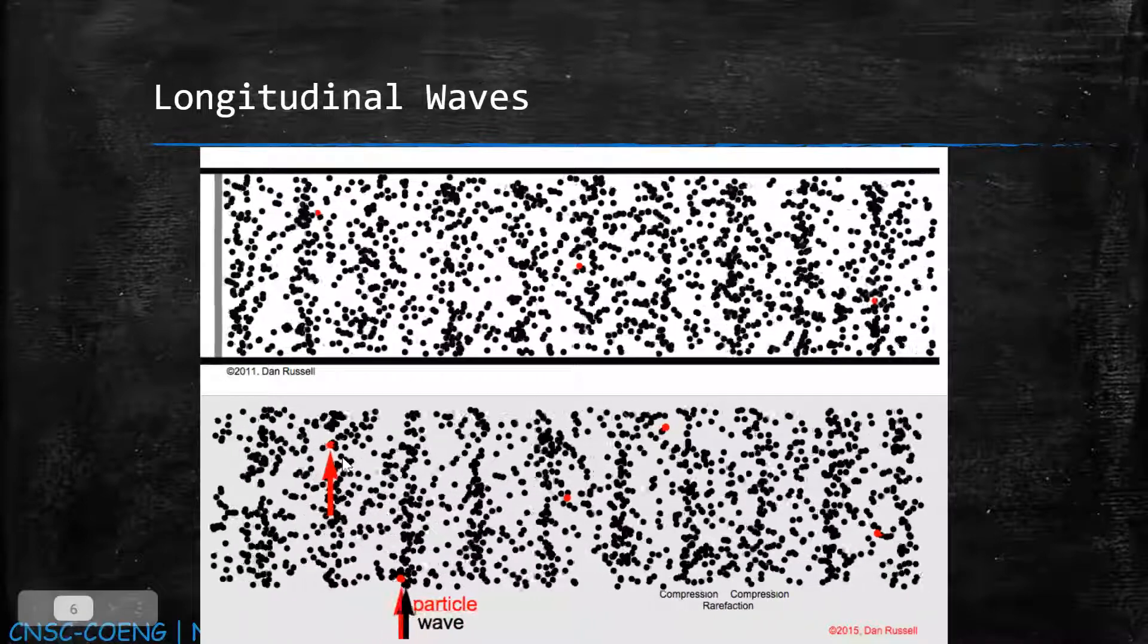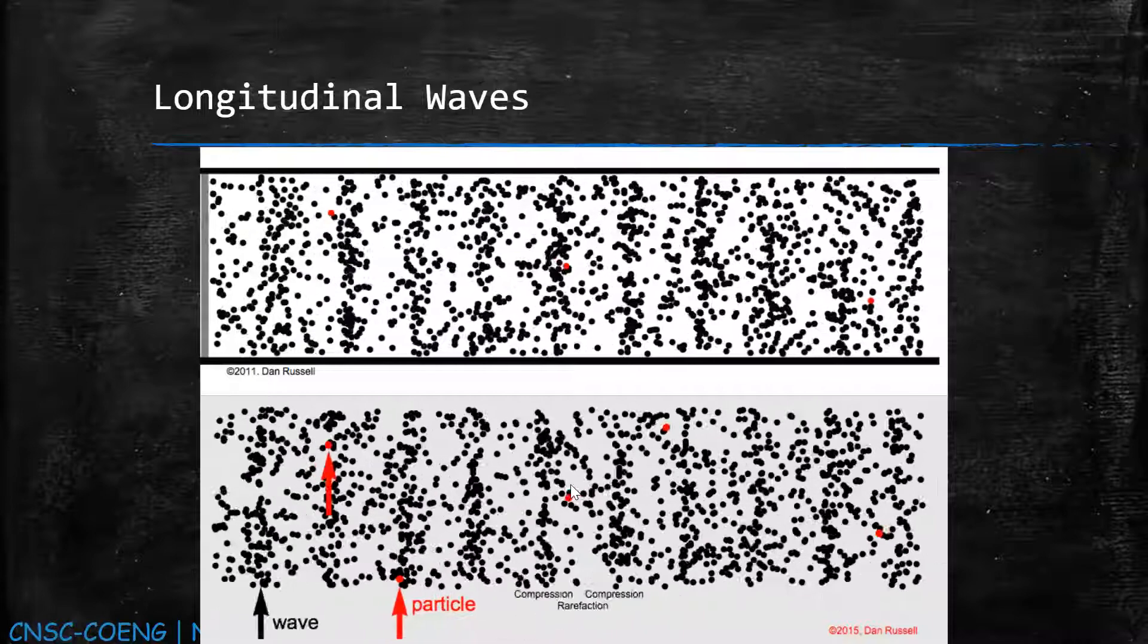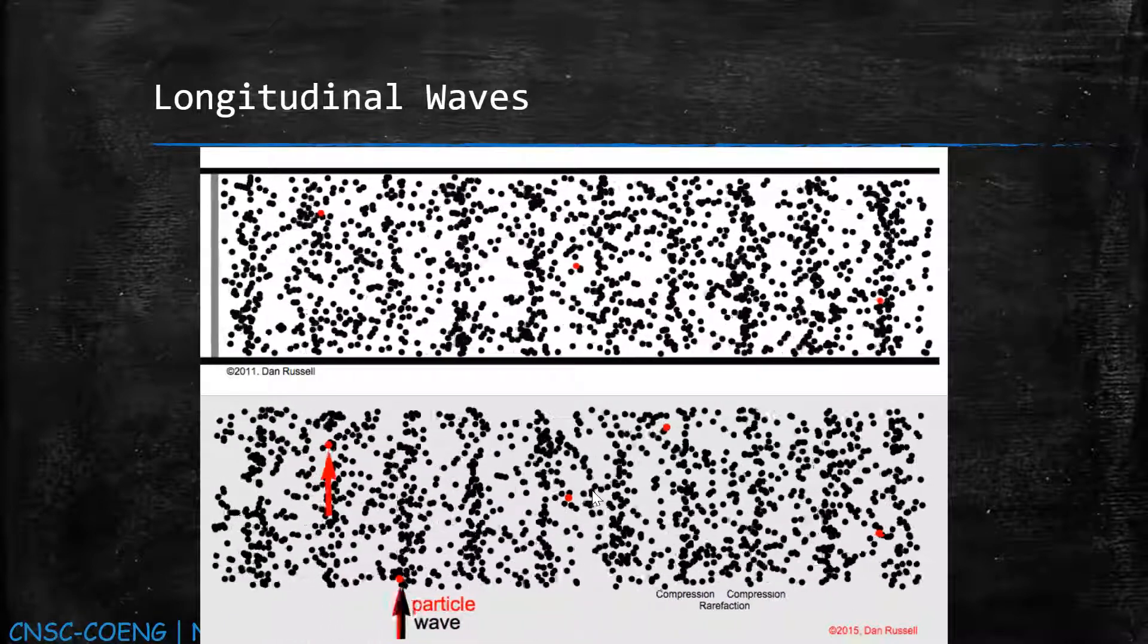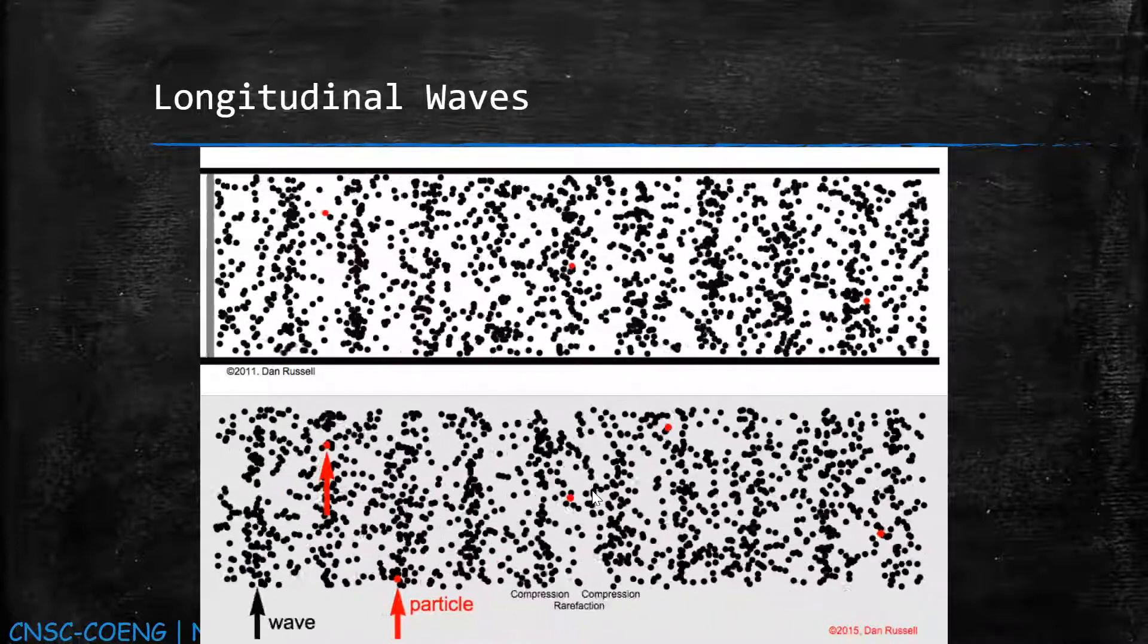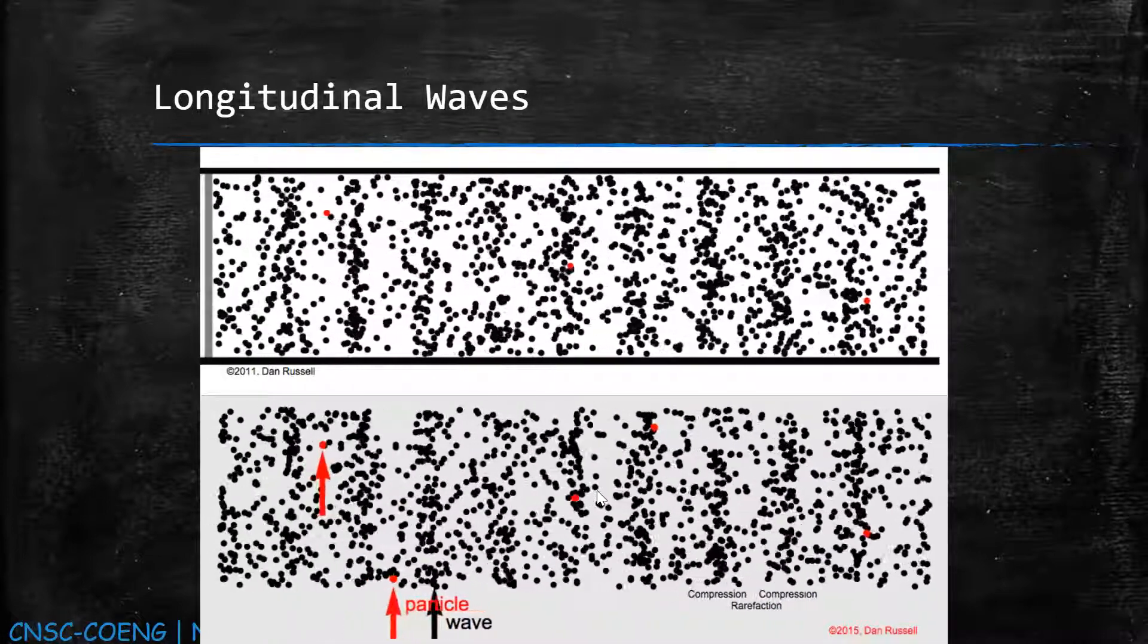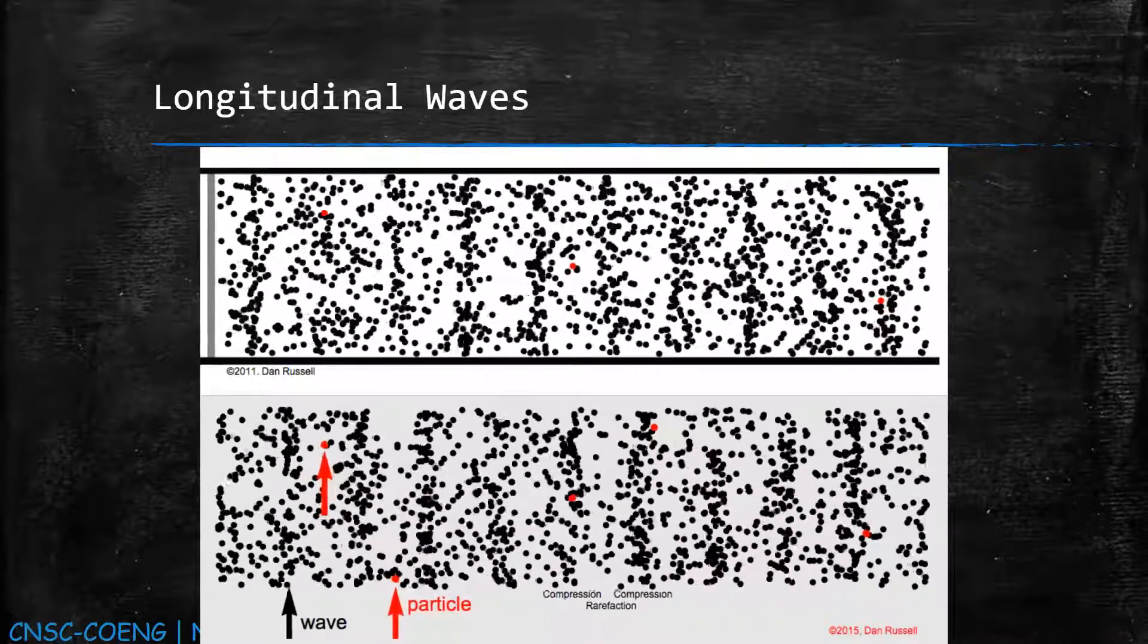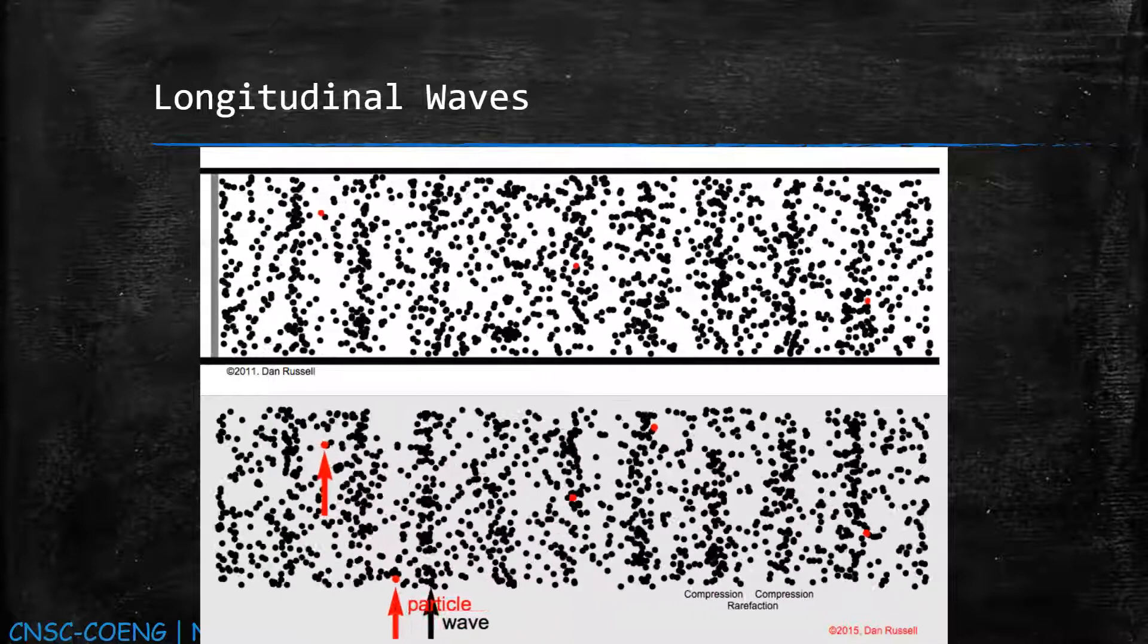In the second animation, the right shows the difference between the oscillatory motion of the individual particles and the propagation of the wave through the medium. In this animation, which also identifies the region of compression and rarefaction. The primary waves in an earthquake are examples of longitudinal waves. The primary waves travel with the fastest velocity and are the first to arrive.